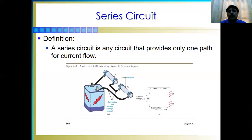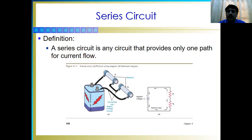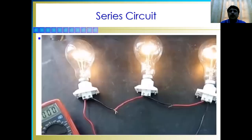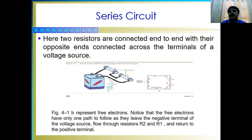In the series circuit, in the tutorial wiring diagram, it is showing the electric connections. In the schematic symbol diagram, it is showing the applied voltage. When there are small dots in the circuit, those represent electrons moving through resistor two to resistor one, going in the opposite direction of the applied voltage. There is only one path for current to flow, which makes it a series circuit. An example shows two resistors connected end to end with the opposite ends connected to the terminals of the voltage source.